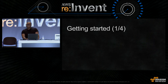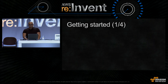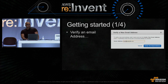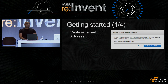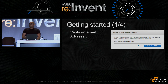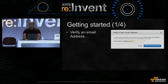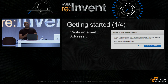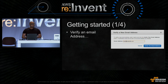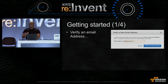So how do you get started with SES? The very first step is to verify with us the email address that you're going to send your emails from. The reason we ask you to do this is to ensure that you're a legitimate email sender that is allowed to send mail from that address. And by ensuring that only legitimate senders are using our platform, we help improve deliverability for all of our senders.